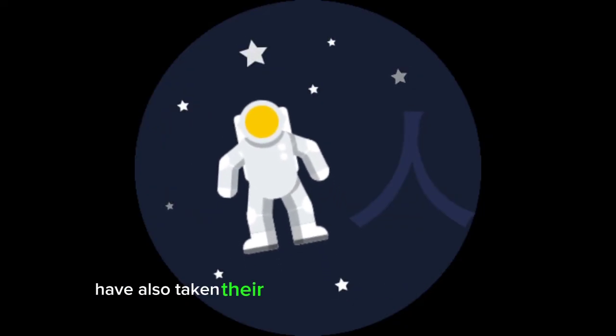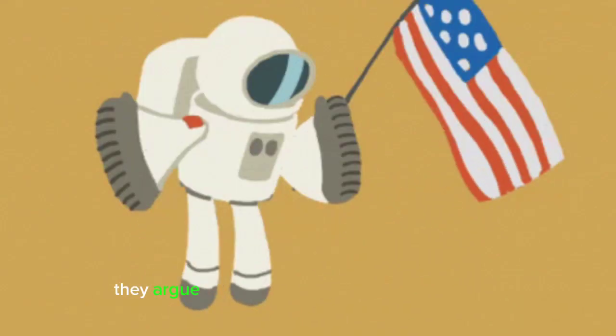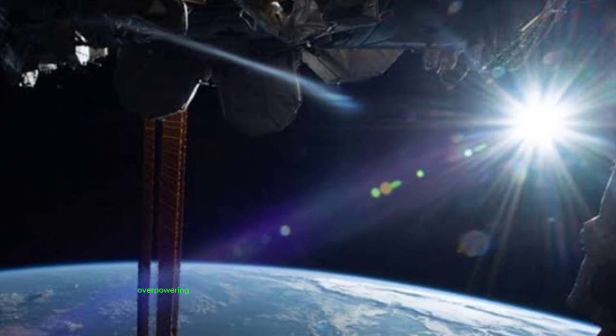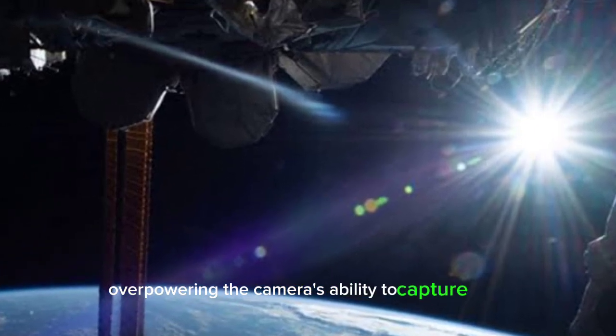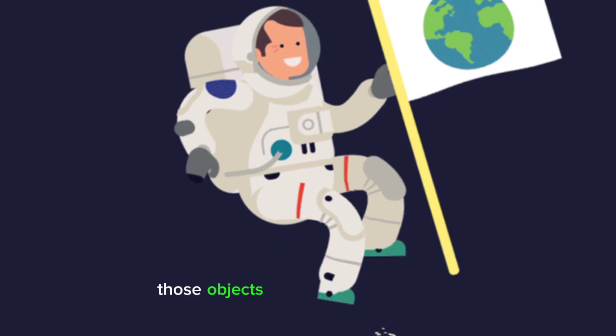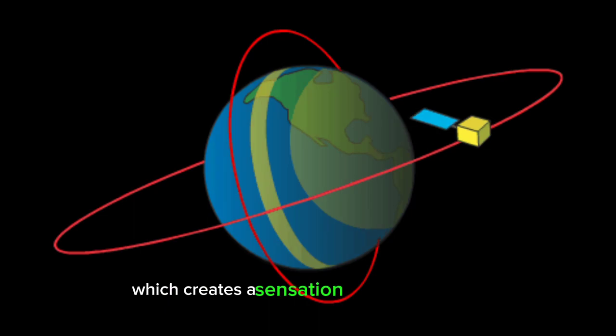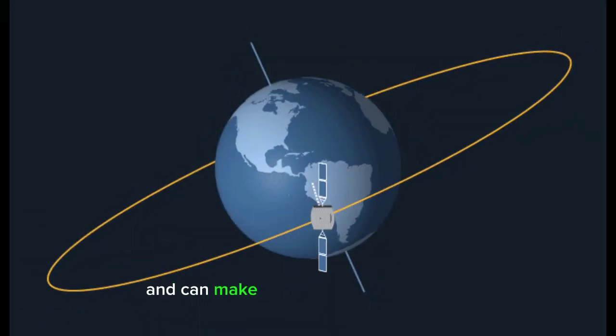But hold on a second—skeptics of the flat earth theory have also taken their shots at debunking these claims. They argue that the lack of stars in space footage is due to the brightness of the sun overpowering the camera's ability to capture them. And remember those objects moving in a straight line? Well, that's because they're in orbit, which creates a sensation of weightlessness and can make things seem a bit different from what we're used to on Earth.